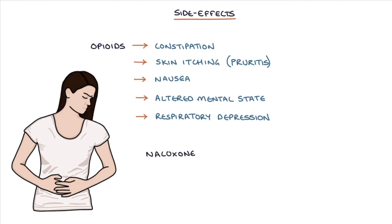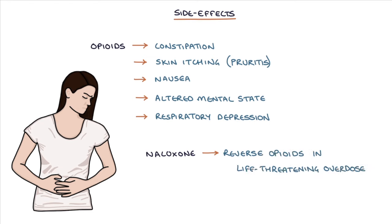Naloxone is used to reverse the effects of opioids in a life-threatening overdose, usually when the patient has respiratory depression.